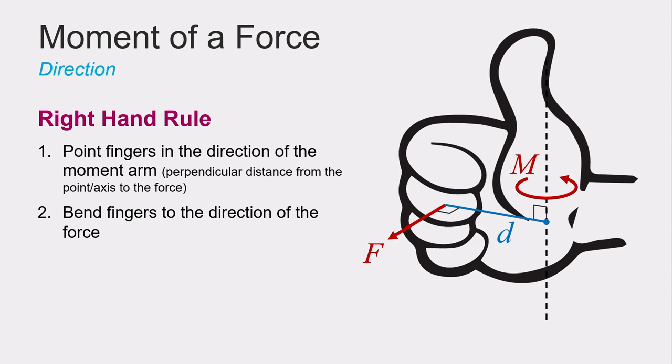Then, you bend your fingers of your right hand to point in the direction of the force. You may need to flip your hand over in order to do this. The direction your fingers curl is the direction of rotation that the moment is tending to induce on a particular body. But remember, we said that a moment is a vector and the vector will point along the axis of rotation.